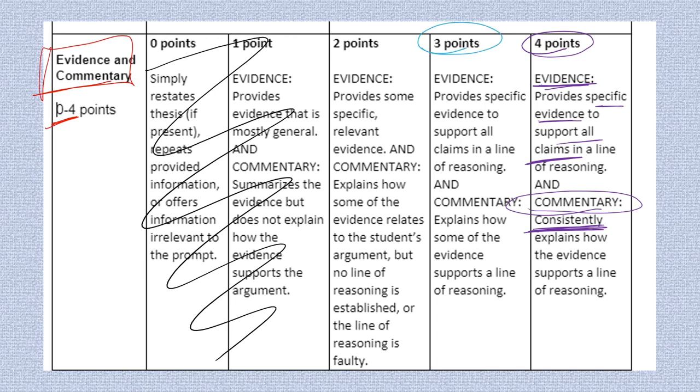All right. What's different if you only earn three points? Well, nothing is different in evidence. It's specific evidence that supports all your claims. But under commentary, now you're only explaining some of the evidence and how it supports your thesis. Especially in a writing assignment that is as short as this one will be, only put in the best pieces of evidence and explain all of them. Don't give up this point because you've missed out on a couple.